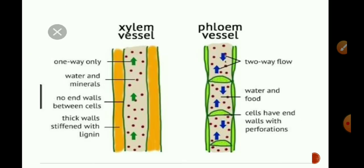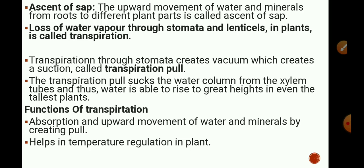In xylem tissue, vessels and tracheids are the main conducting components. Tracheids of vessels and tracheids of roots, stems and leaves are interconnected, forming a continuous system of water-conducting channels reaching all parts of the plant. The absorption of water and dissolved minerals takes place by roots through root hairs. Root hairs are extensions of epidermal cells, very small hair-like structures in direct contact with the soil. Root hairs absorb water from soil by osmosis and take in minerals by the process of diffusion.